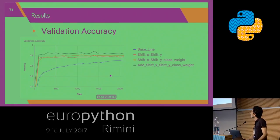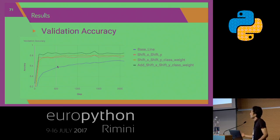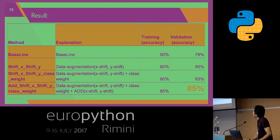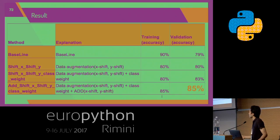The result shows the validation accuracy. The blue line is the baseline. The red line shows data augmentation with shift X and shift Y applied. The yellow line shows shift X and Y with class weight applied. The green line shows adding training data by data augmentation with class weight applied. The best result achieved 85% accuracy.